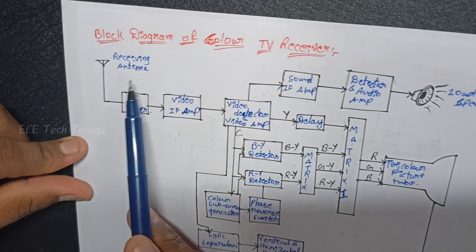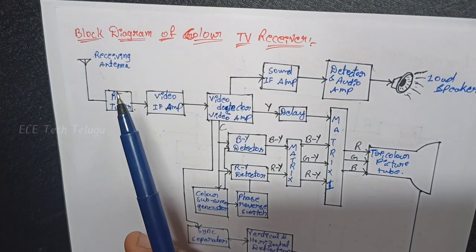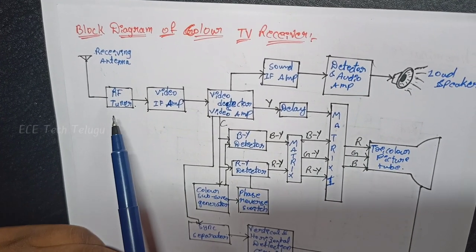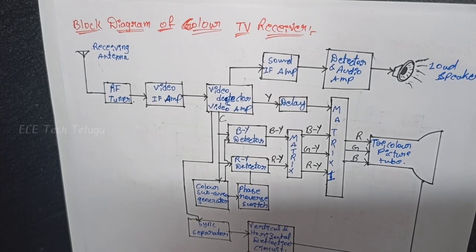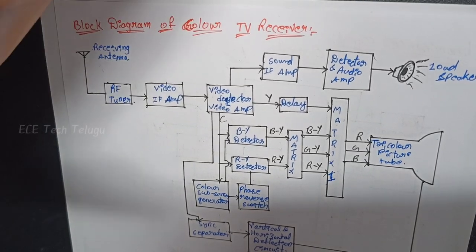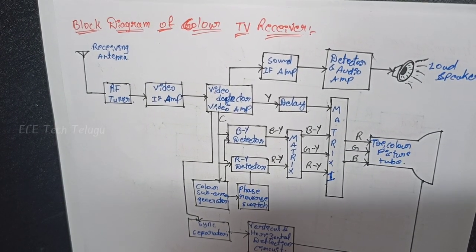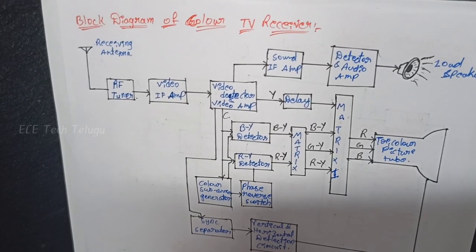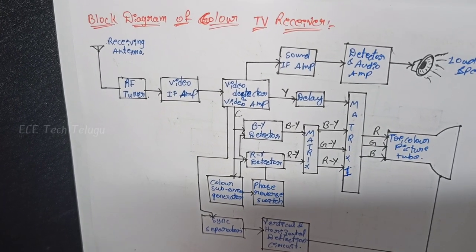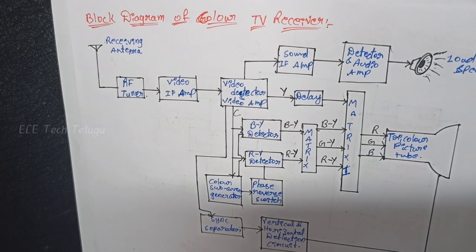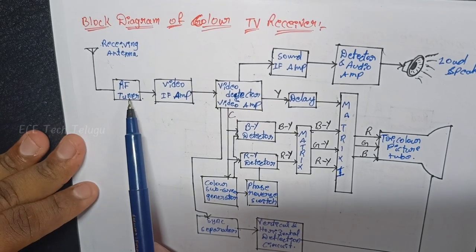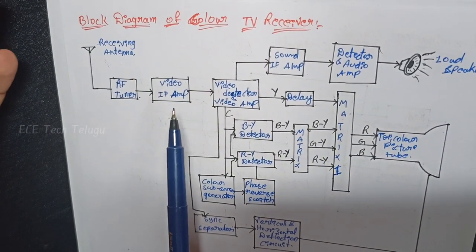First, we need a receiving antenna. Our receiving antenna receives the common signal — we receive whatever is transmitted without specific tuning. We then pass it to the RF tuner. We receive a weak signal here, because when we transmit, the signal is strong, but by the time it arrives, it is weak due to external noise added during transmission through space.